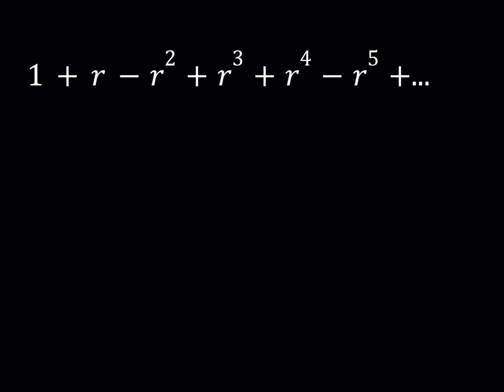Hello everyone. In this video we're going to be finding an infinite sum: 1 + r - r² + r³ + r⁴ - r⁵ + ... and so on. The rule is that every third term has a negative sign, so r², r⁵, r⁸, and so forth come with negative signs.